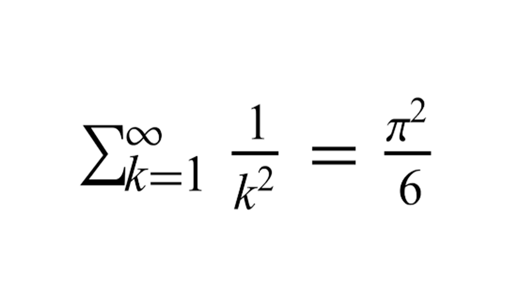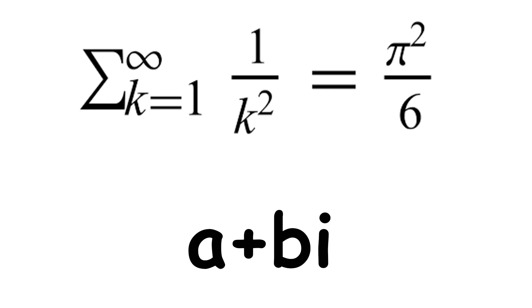When s is a complex number, one that looks like a plus b times i, using the imaginary number i, finding zeta of s gets tricky. So tricky, in fact, that it's become the ultimate math question.